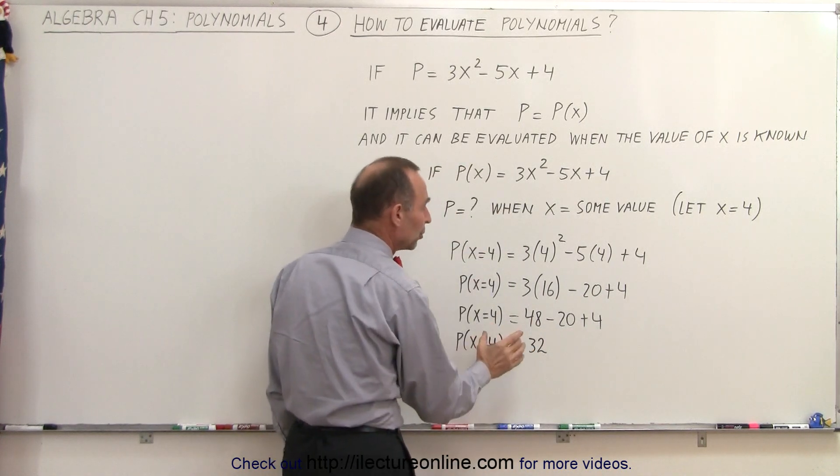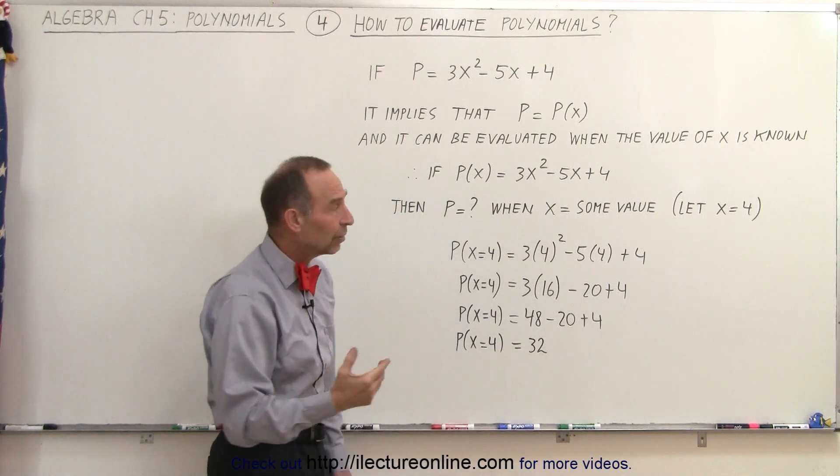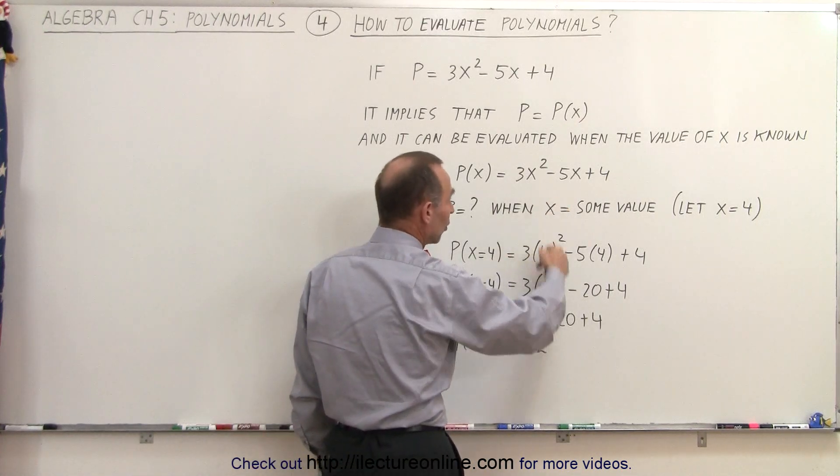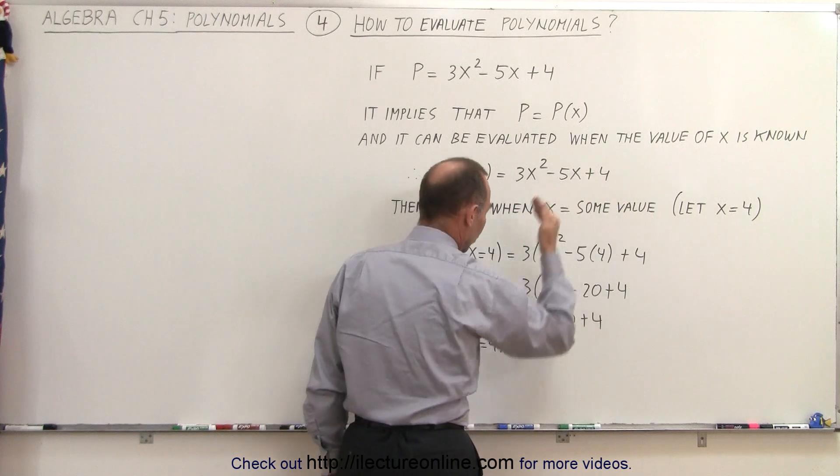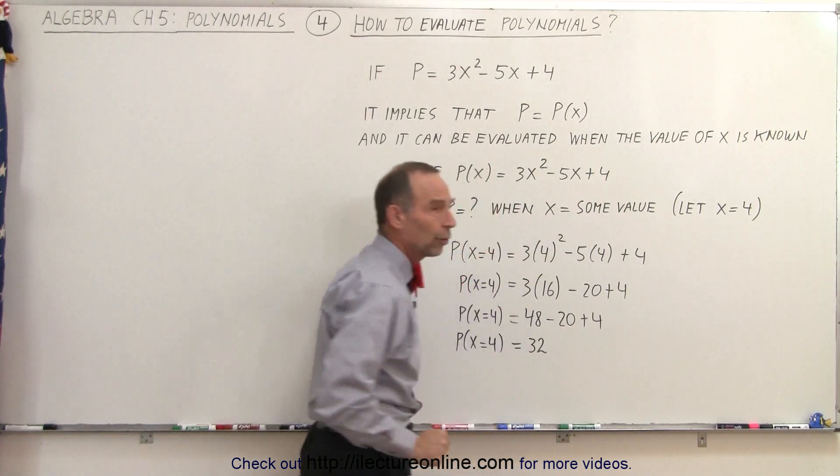which means that the polynomial is evaluated when the number 4, when x is known. So, when x equals 4, the polynomial is equal to 32.